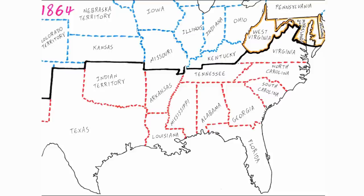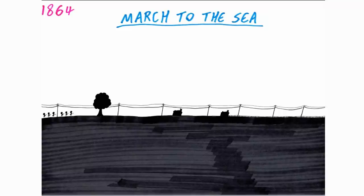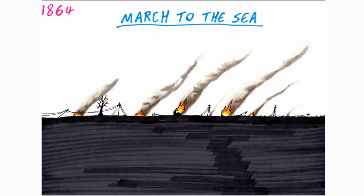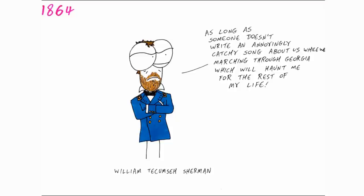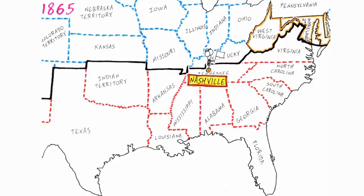That November, Abraham Lincoln was re-elected president, defeating Democrat candidate George McClellan. Sherman marched his army through Georgia towards Savannah, destroying industry, infrastructure, and civilian property along the way — known as the March to the Sea. Sherman captured Savannah on December 21st and offered it as a Christmas present to President Lincoln. The Confederate Army of Tennessee was also defeated in Nashville.